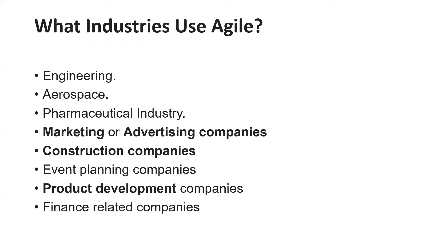As I mentioned, the question was: is it only the software industry using Agile? The answer is no. Agile methodology is not only used by software — it is used by engineering companies, aerospace, pharmaceutical, marketing, advertising, construction, planning, product development, and finance-related companies. All these industries use Agile methodology.